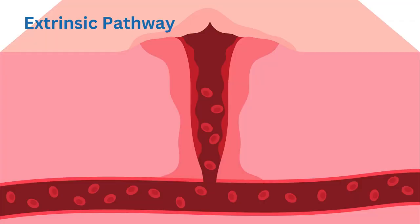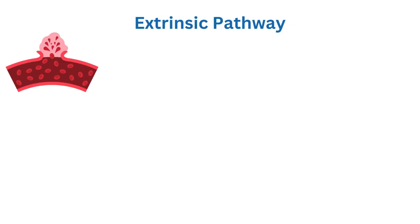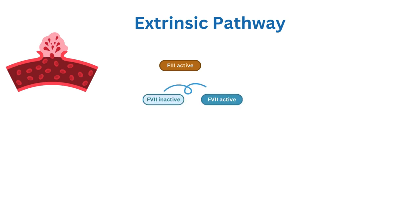The extrinsic pathway is initiated by tissue damage outside of blood vessels. Tissue damage releases tissue factor, also known as Factor 3, which then activates several other steps, of which activation of Factor 10 is the last step.